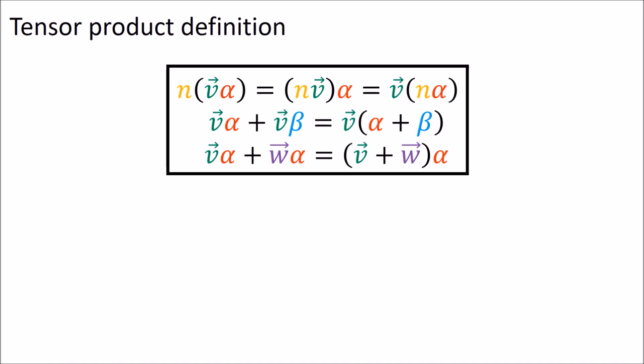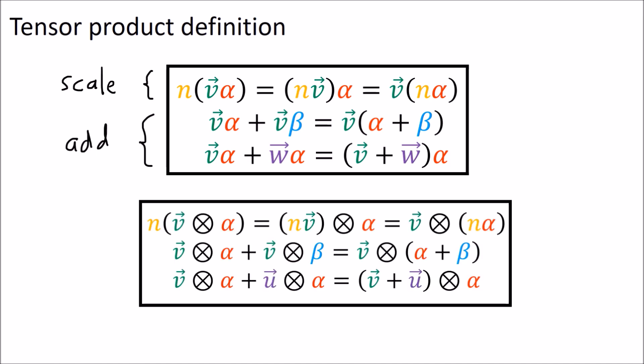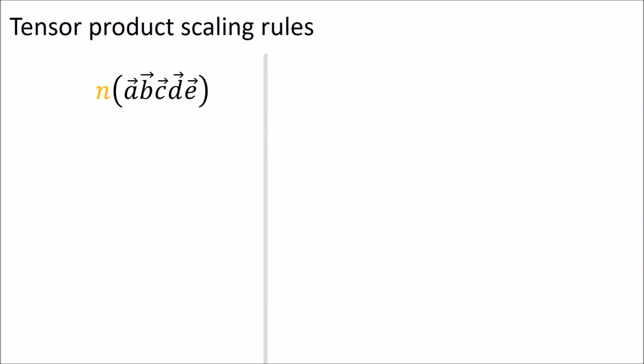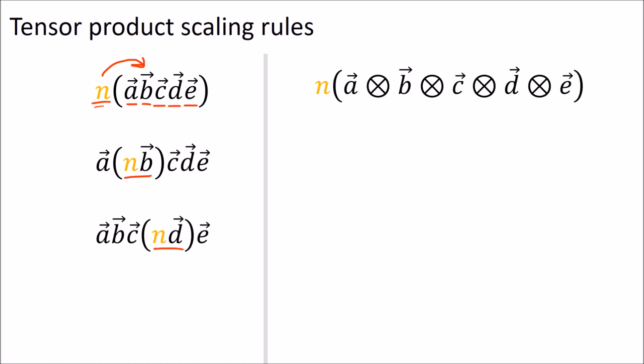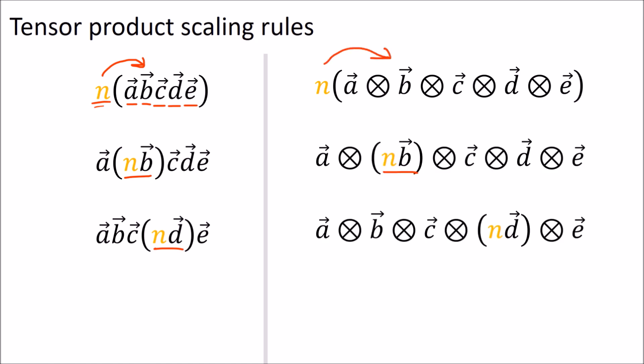So what we've just done is come up with scaling and adding rules, which we can write in my notation or using the circle-times notation from textbooks. The scaling rule says that when we have a bunch of tensors producted together and we scale the entire collection by some number n, we can move n inside and scale any one of the tensors we like — say a, b, c, d, or e — but we can only choose to scale one of them.